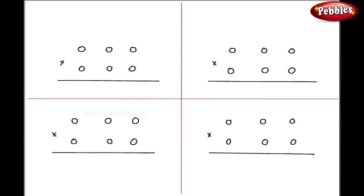Now let us see the multiplication of a 3-digit number multiplied by another 3-digit number. This procedure involves 4 steps. Let us see them one by one.